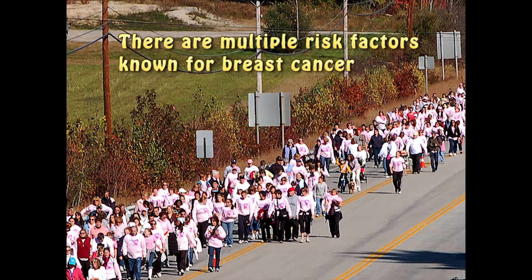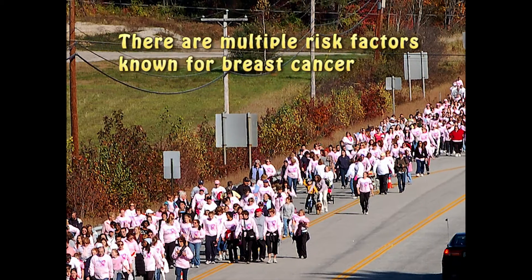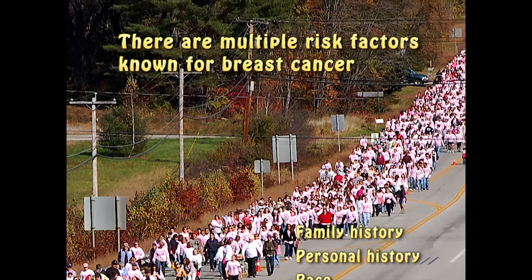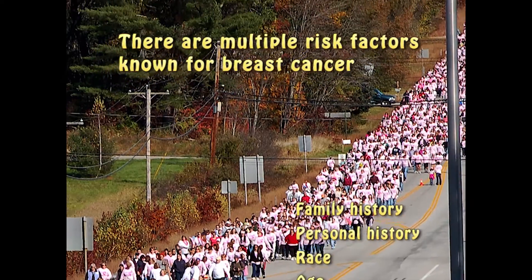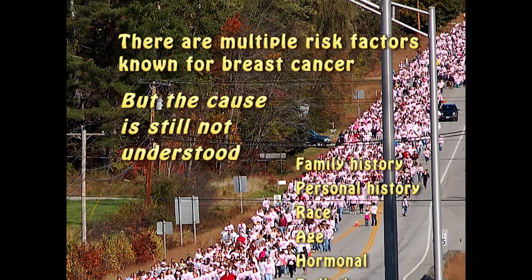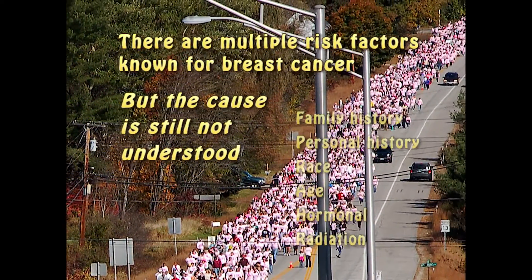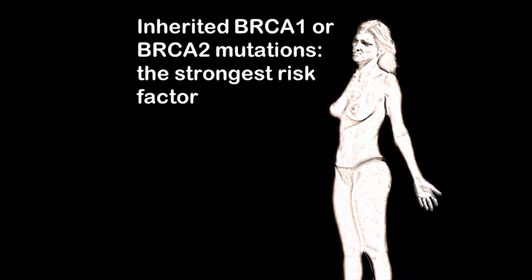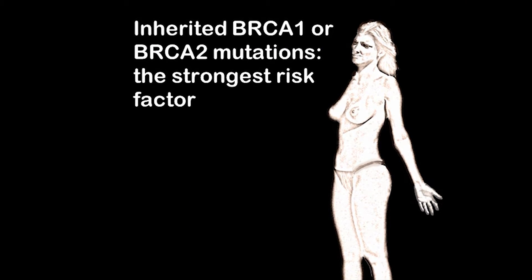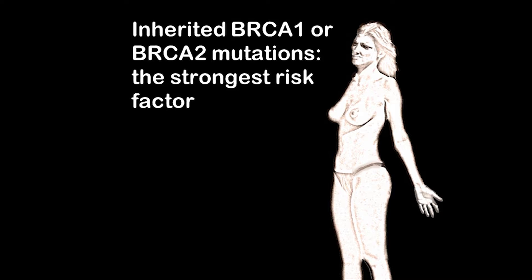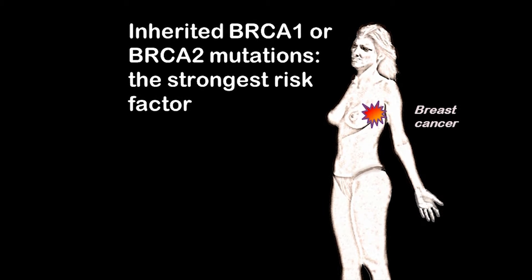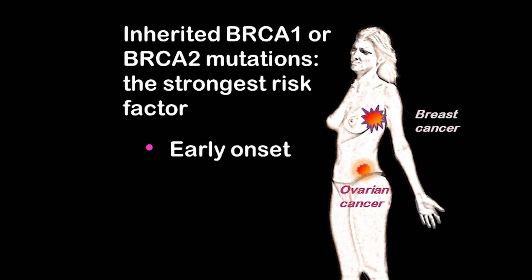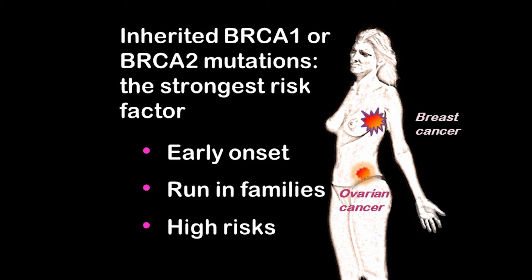There are many risk factors known for female breast cancer, but we still do not understand what actually causes it. Inheriting a mutation in BRCA1 or BRCA2 genes is probably the strongest risk factor. Breast and ovarian cancers occur early, before age 50. The cancers run in families, and the risk can be quite high.